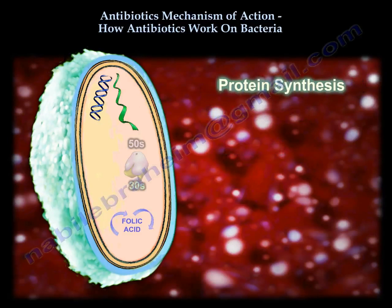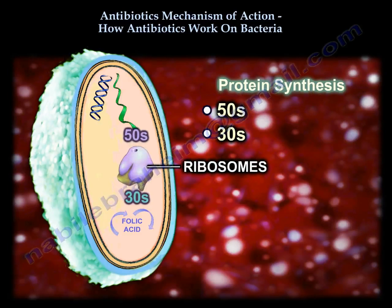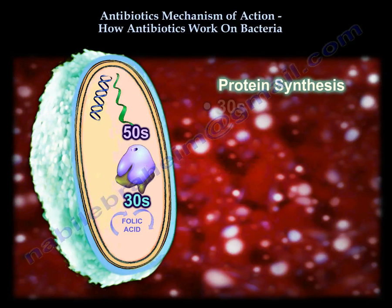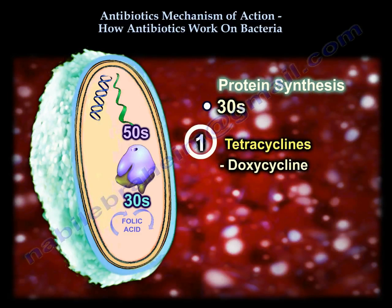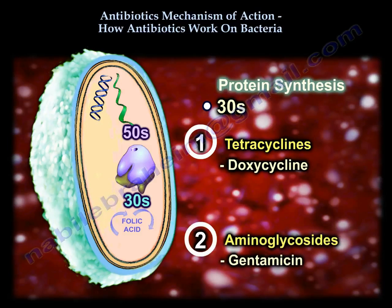The last category is protein synthesis. What will work on protein synthesis? It targets either the 50S or 30S ribosomal subunit. The 30S would be tetracycline, like doxycycline, and aminoglycosides, like gentamicin.